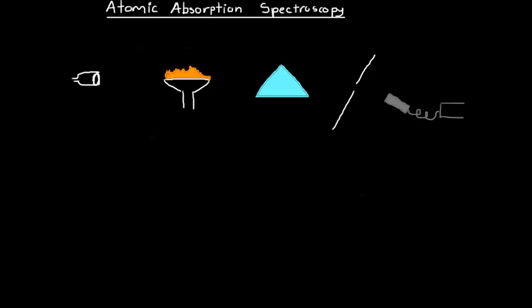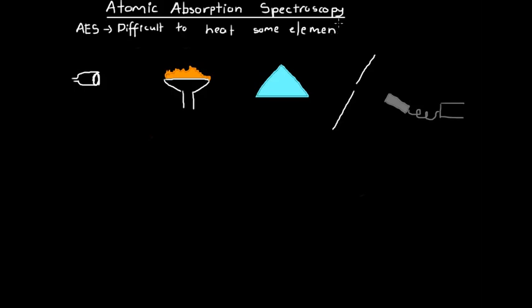Atomic emission spectroscopy was very useful and effective for looking at different types of substances. However, there was a recurring problem: it was very difficult to heat some elements in a flame enough for them to get excited and emit light. This made atomic emission spectroscopy a bit difficult to use and not very versatile — not appropriate for all the elements that everybody wanted to analyze.